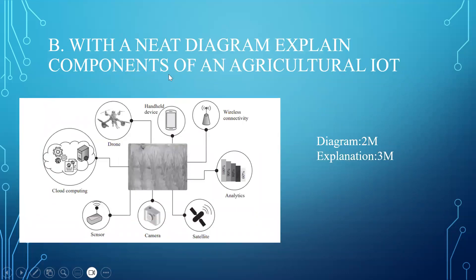Next: with a neat diagram, explain components of agricultural IoT. Draw the diagram, where the diagram will have 2 marks, and you will be explaining about sensor, camera, satellite, analytics — all these components will be explained thoroughly. Make sure your explanation is for only 3 marks because it totally contains 5 marks. You can precisely explain — don't detail each and every device; the explanation consists of 3 marks, totally 5 marks.